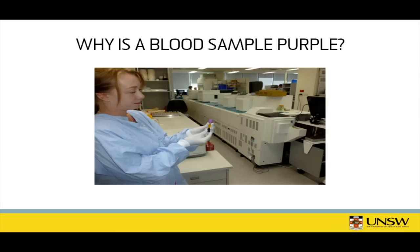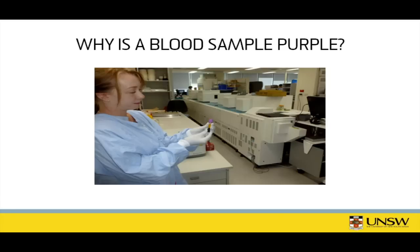With this blood sample taken from a person, where is the blood normally taken from? A vein in the arm. And so why would you expect the blood to typically be a purple type colour? Because it's blood that's going back to the heart, so it's low in oxygen.